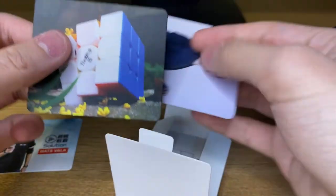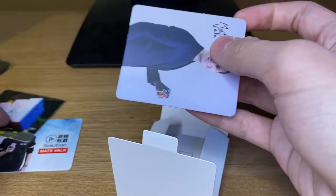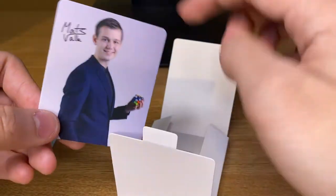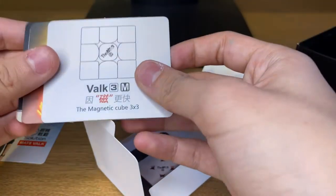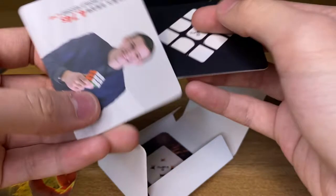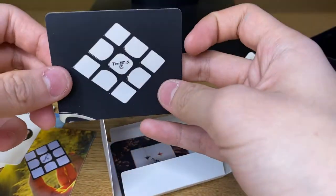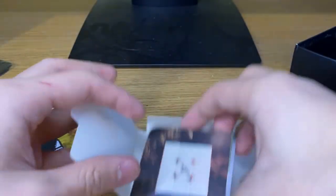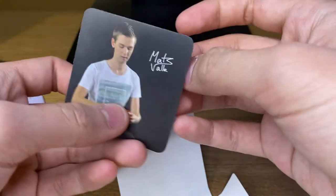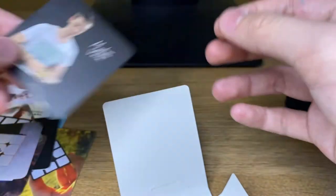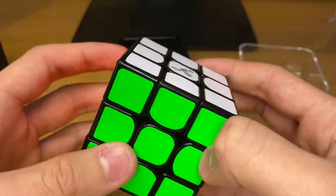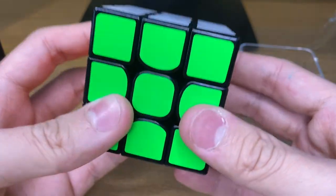And some stickers, some cards and another picture of Mats Valk with his autograph which is nice. We've got Valk 3M, another Valk 3M, Mats Valk again in the Valk 3M. Yeah, it's just Valk 3M, Valk 3M, Valk 3M and Mats Valk again. This is a really good cube, get it in Cubes UK.